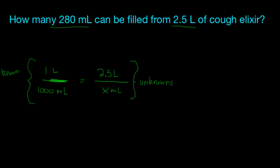Something that is really important to always remember is to label your units. We always want to have our units. Milliliters are both on the bottom, liters are both on the top. We always want the units to be on the same side, whether it is going to be the top on both sides or the bottom on both sides. Now we are going to cross multiply and divide — 1,000 milliliters times the 2.5 liters, divide it by the 1 liter, and that is going to give us x equals 2,500 milliliters.